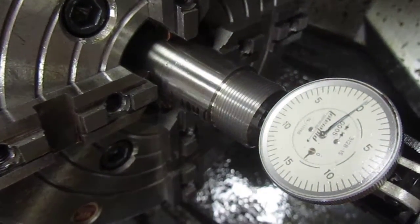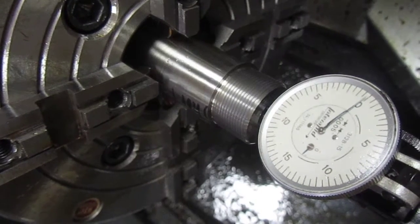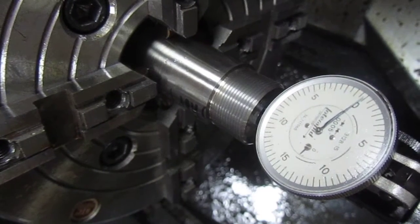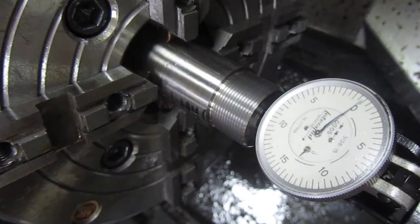This is Mark at Short Action Customs. We've got a .308 Bartlein Heavy Palma barrel in the lathe. We just got done fitting it up and chambering it for the new American Rifle Company M5 Mousing Field.